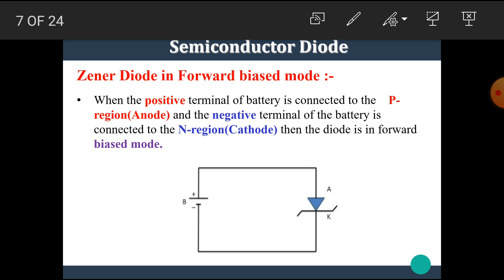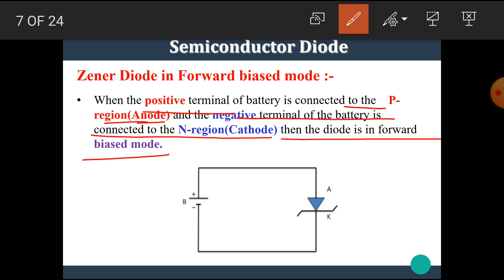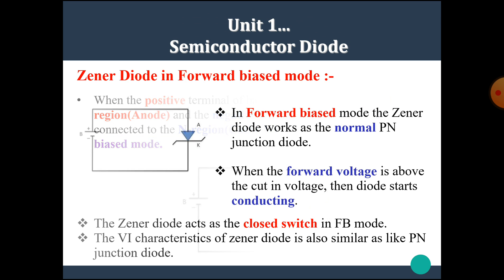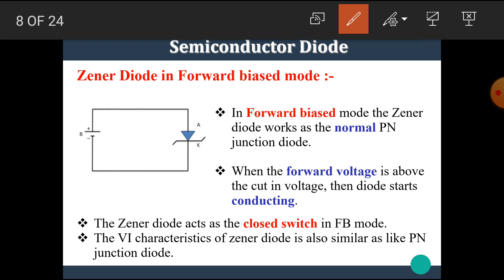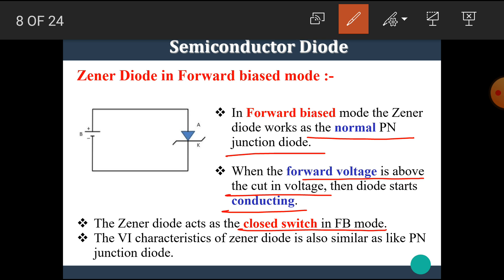Let's see the Zener diode in forward bias mode. When the positive terminal of the battery is connected to the P region (anode) and the negative terminal is connected to the N region (cathode), then the diode is in forward bias mode. In forward bias mode, the Zener diode works as a normal PN junction diode. When the forward voltage is above the knee voltage, the diode starts conducting. The Zener diode acts as a closed switch in forward bias mode.